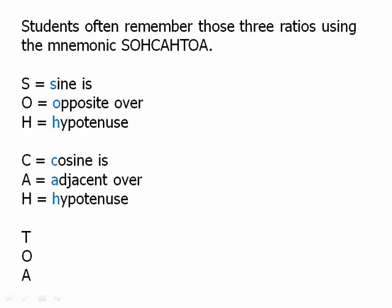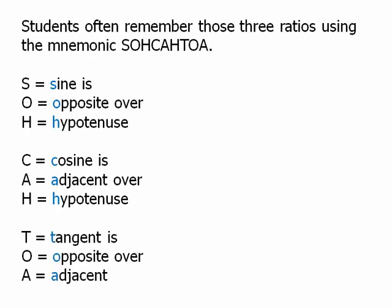Cosine is adjacent over hypotenuse. That's the CAH. And tangent is the opposite over adjacent. So we have to remember that it's SOHCAHTOA.